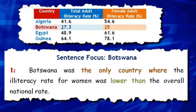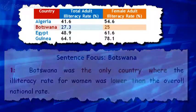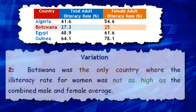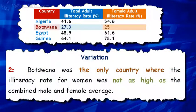Botswana was the only country where the illiteracy rate for women was lower than the overall national rate. Botswana was the only country where the illiteracy rate for women was not as high as the combined male and female average.